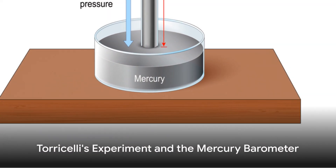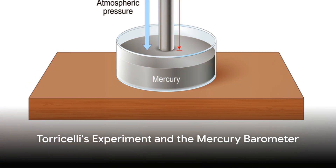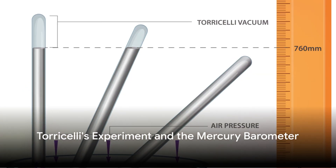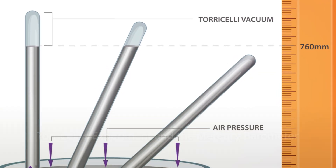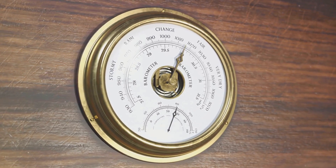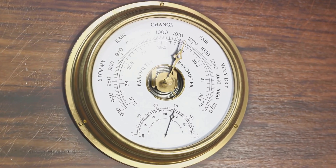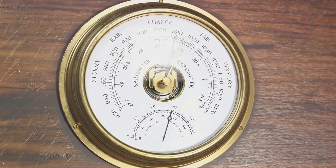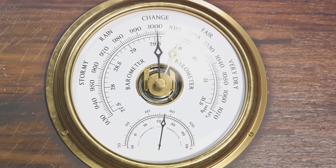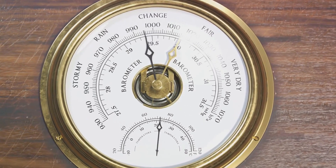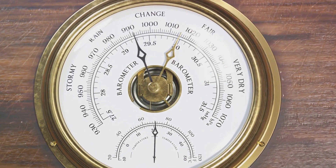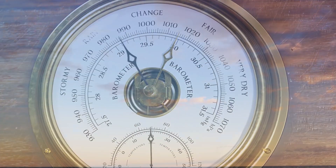Let's explore the historical experiment by Torricelli in 1643, which led to the development of the mercury barometer. This experiment demonstrates how atmospheric pressure can be measured using a column of mercury.